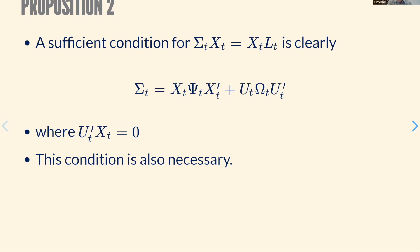The main result — Proposition 2 — says: when the covariance matrix factors in a specific form with U-transpose times X equal to zero, just multiply it out and you'll see that's a sufficient condition for spanning of covariances by characteristics. And it's also necessary. This is a nice-looking result. The main implication is that this is more likely to hold when X is large — more characteristics make it more likely we can span the frontier.